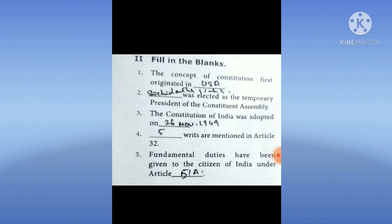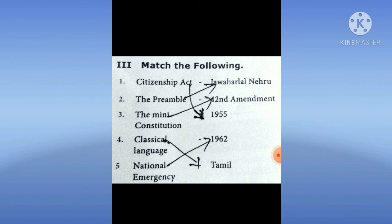Fill in the blanks. The concept of constitution first originated in USA. Dr. Sachinanda Singh was elected as the temporary president of the Constituent Assembly. The Constitution of India was adopted on 26 November 1949. Five writs are mentioned in Article 32. Fundamental duties have been given to the citizens of India under Article 51A. Match the following: Citizenship Act 1955; Preamble — Jawaharlal Nehru; Mini Constitution — 42nd Amendment; Classical Language — Tamil; National Emergency — 1962.